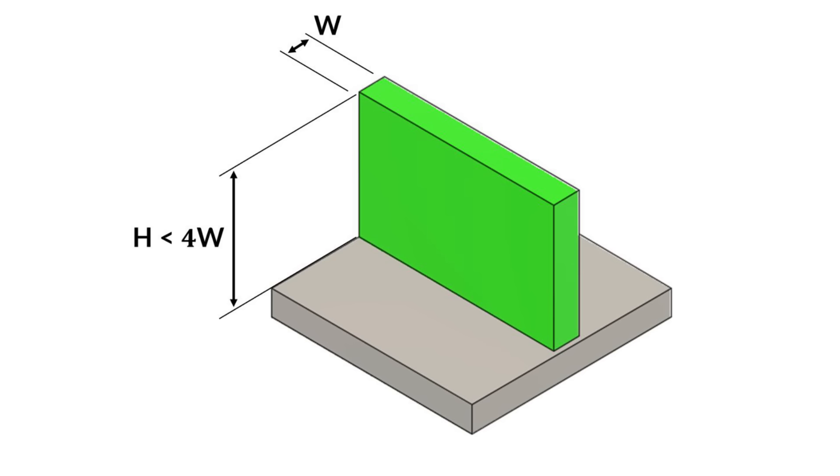Keep the height of machined features less than 4 times their width. Tall and skinny features will vibrate significantly during machining causing poor tolerances and surface finishes. Try and add reinforcement where possible to reduce tall isolated features.